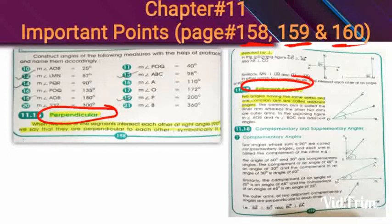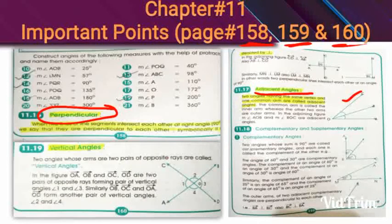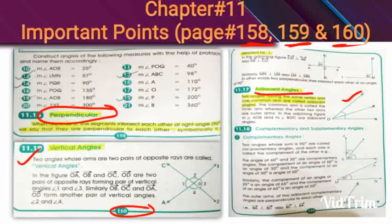On page 159, you also have the definition of adjacent angles — kindly highlight that. On page 160, you have the definition of vertical angles: two angles whose arms are two pairs of opposite rays are called vertical angles. Please highlight this definition and the figure of vertical angles.